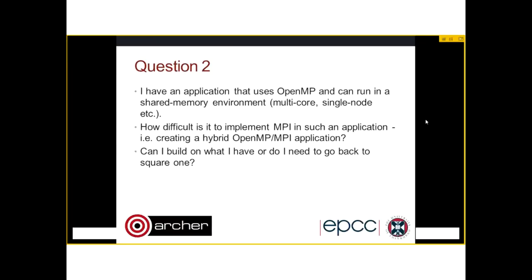If you tried to exactly copy the fork-join pattern, you would naturally want to use MPI's dynamic process spawning features, which are rarely used and not always supported on big machines. Archer, for example, doesn't support MPI_Spawn or MPI_Spawn_multiple. So you would have to change not just the OpenMP directives to MPI functions, but also the fundamental approach to parallelism — a much more fundamental change.